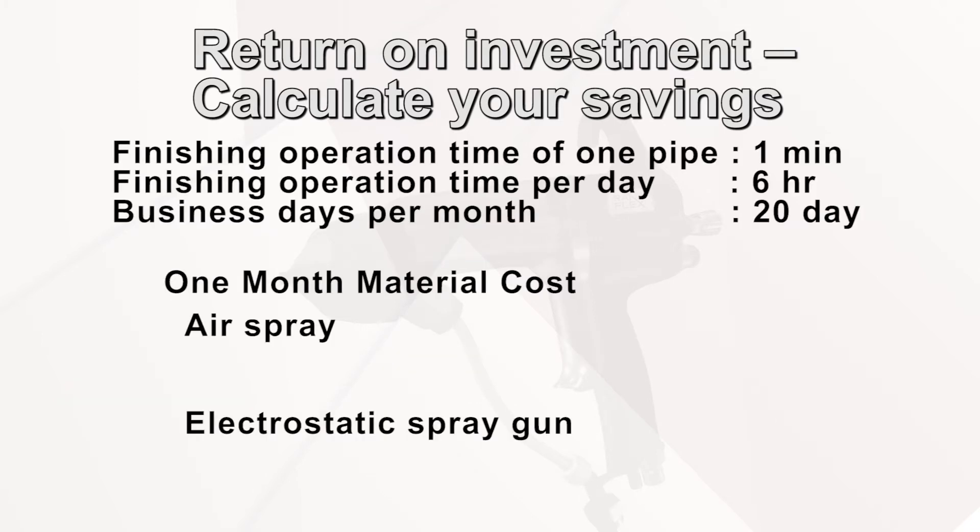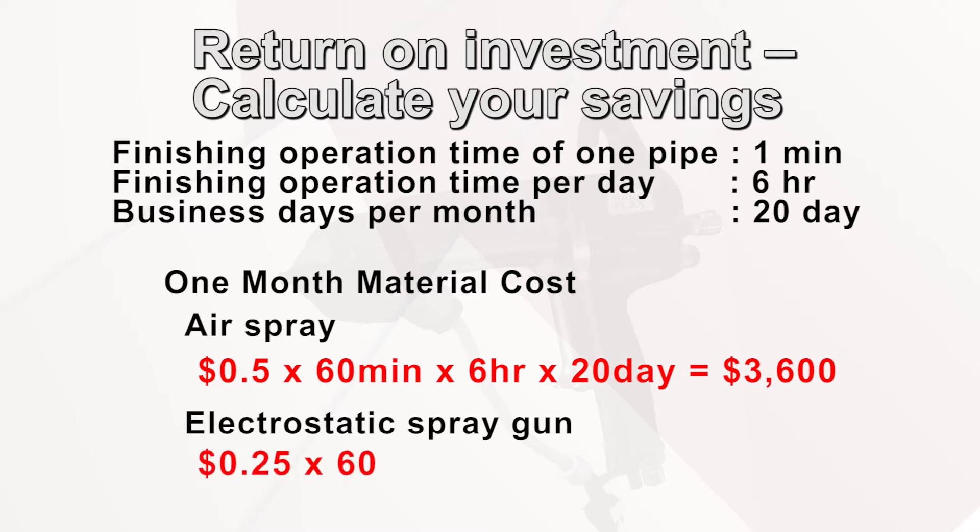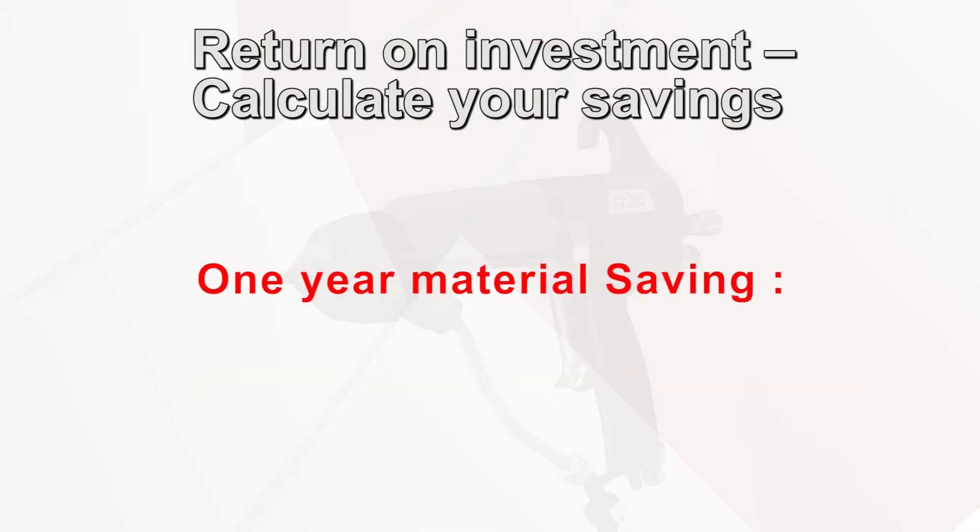Let's calculate your material savings. It takes about 1 minute for this pipe, 6 working hours a day, 20 business days per month. Air spray gun costs you 3,600 US dollars a month. RansFlex costs you 1,800 US dollars a month. For one year, you can save 21,600 US dollars with RansFlex.